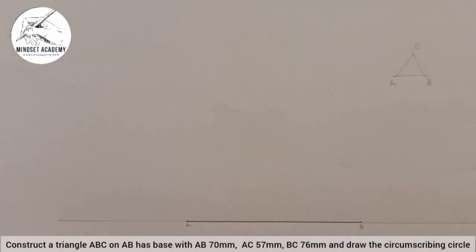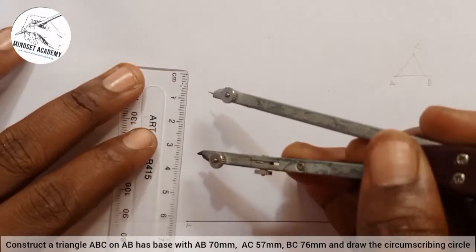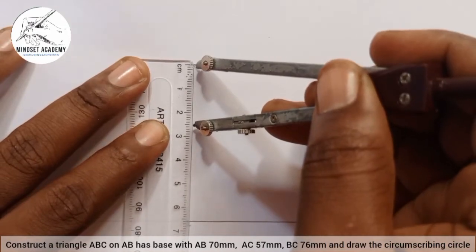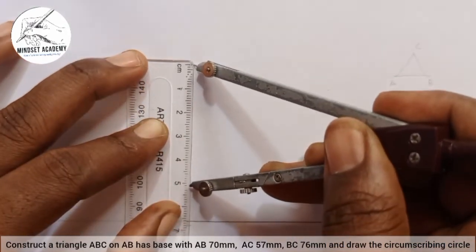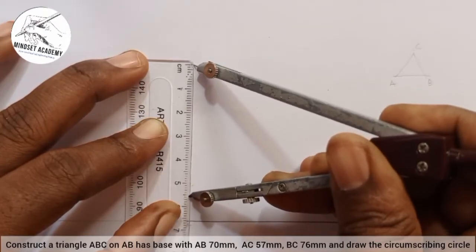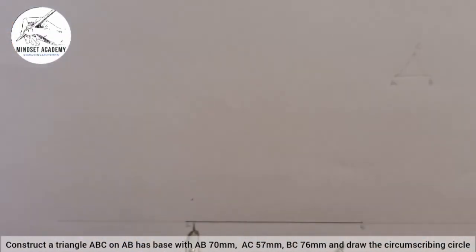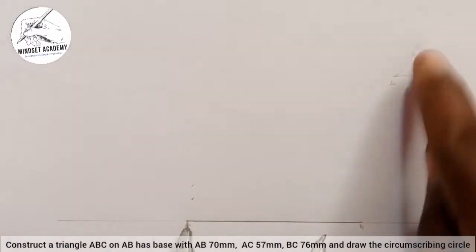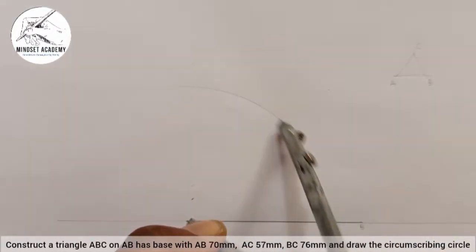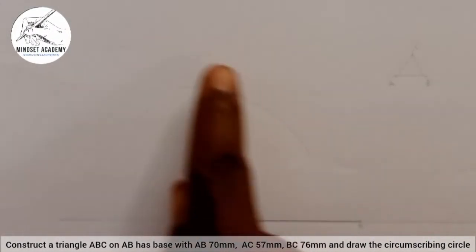Now the next thing is to get AC. So I will measure AC which is 57mm. This is 0, this is 50 and this is 55, then this is 57 here. And I will place it at A. Since we are talking about AC, then C is lying somewhere around this arc here.